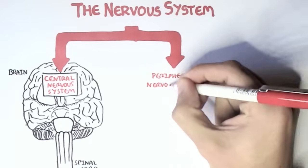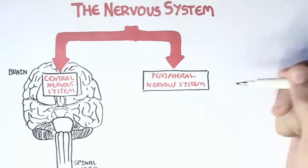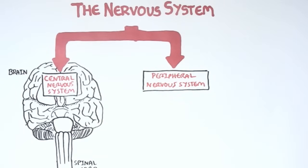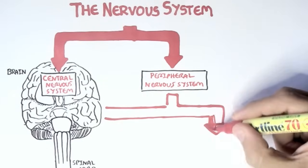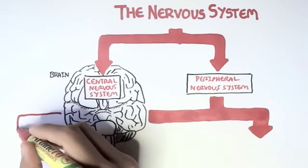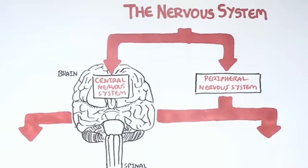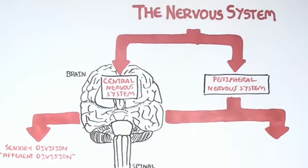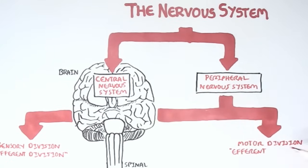Then you have the peripheral nervous system. The peripheral nervous system is as important as the central nervous system, because it is what brings information and signals to the central nervous system, and what takes them out from it. The peripheral nervous system can be divided into two parts: a sensory division, or afferent division, and a motor division, or efferent division.